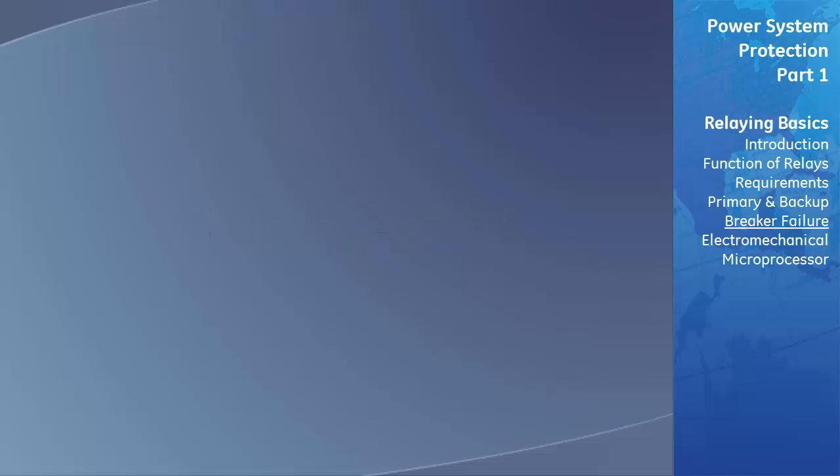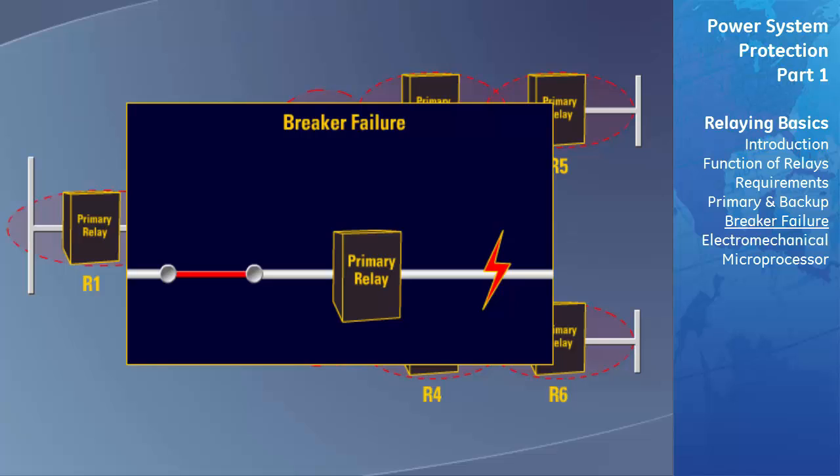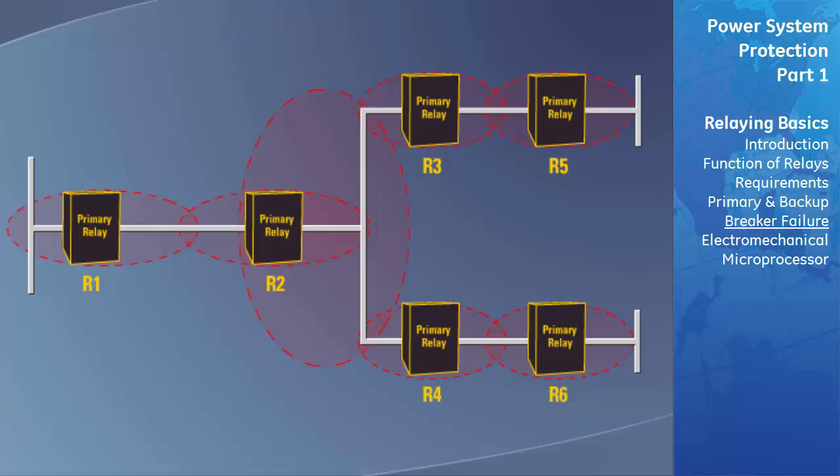Let's look at an example of a breaker failure protective element. In this example, the protective relays operate correctly, but the associated circuit breaker fails to clear the fault because of some malfunction within the breaker or its control circuits. The fault will now remain on the system until some other means is used to clear it. In our example, the primary or backup relays start a timer once a fault has been detected. The timer will then time out and send a trip signal to all breakers that can feed the failed breaker with power.